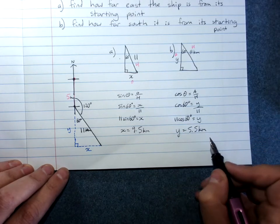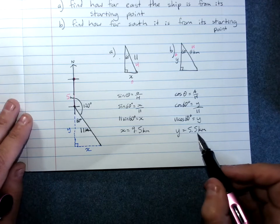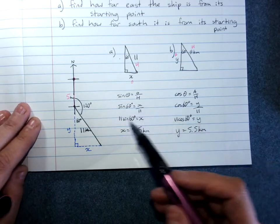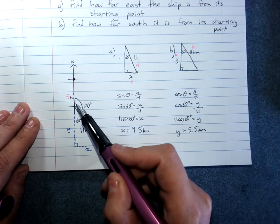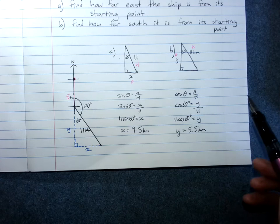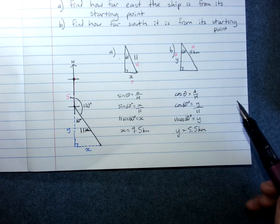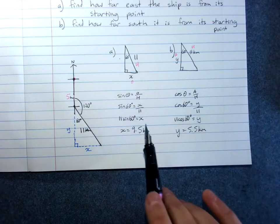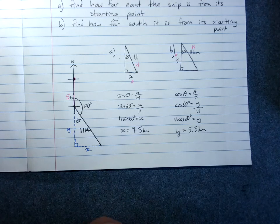Now this is not the answer to question B, because question B wants to know how far south it is from its starting point. And it did go 5 kilometres south to start with. So the answer would be that the ship is 10.5 kilometres south from its starting point. And for both of these, we would write a word answer.